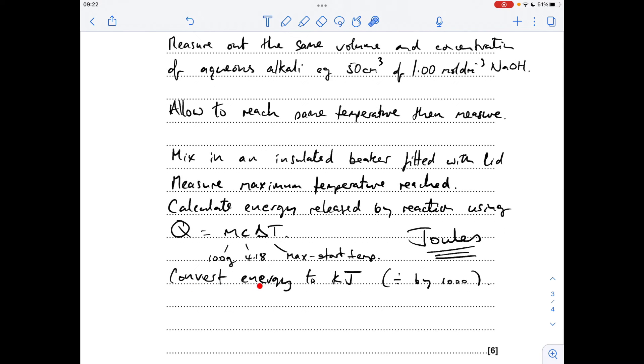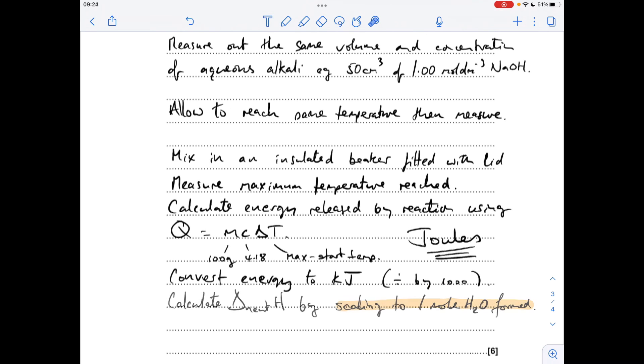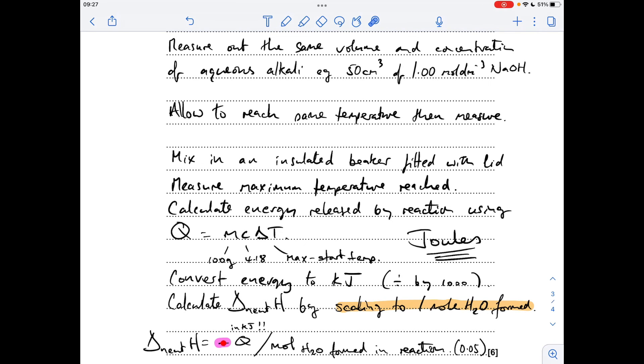You then convert that energy value to kilojoules by dividing by 1,000. And then to calculate the enthalpy change of neutralisation, you'd need to scale up the kilojoules produced by the reaction. Scale them up to what would have been produced for one mole of water. And the way you do that is minus Q in kilojoules. I'll explain the minus in a second. Minus Q in kilojoules divided by the moles of water formed in the reaction.